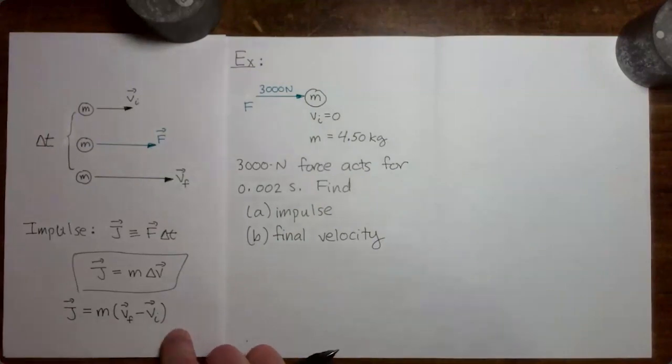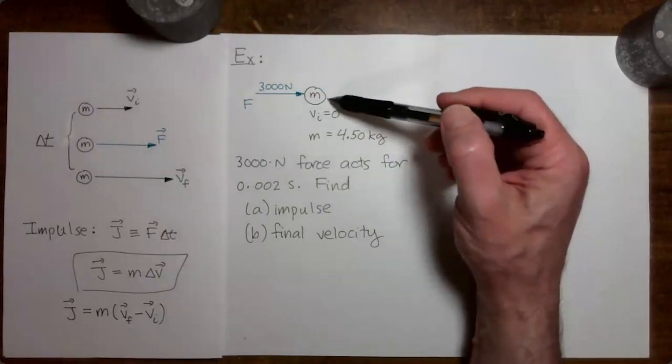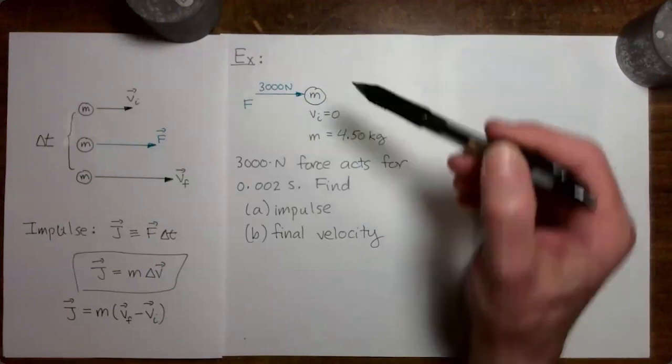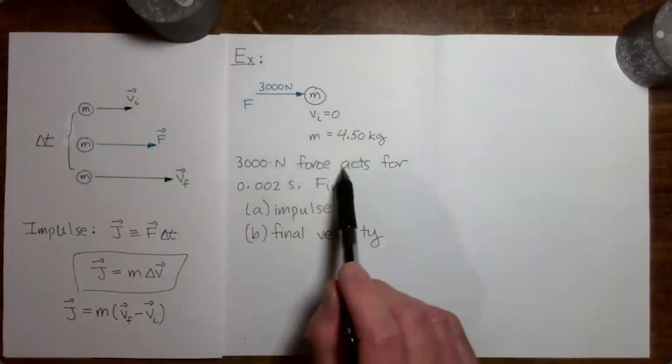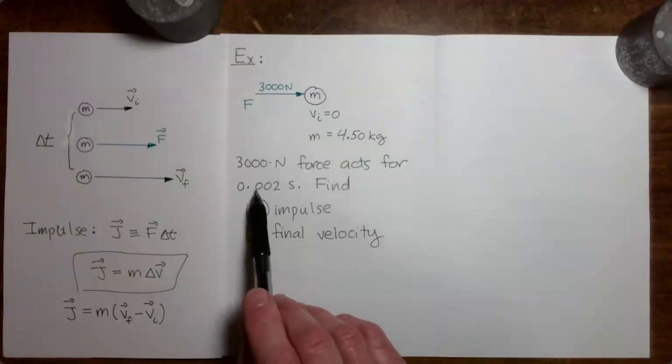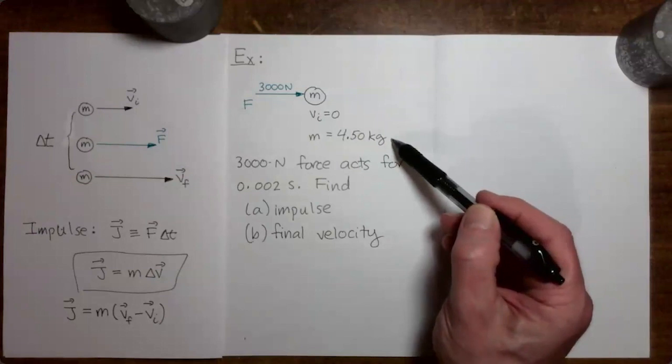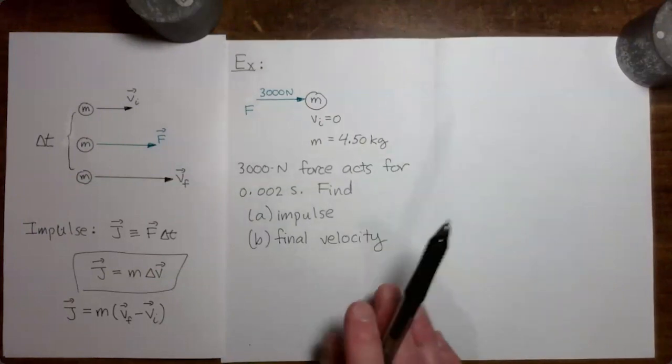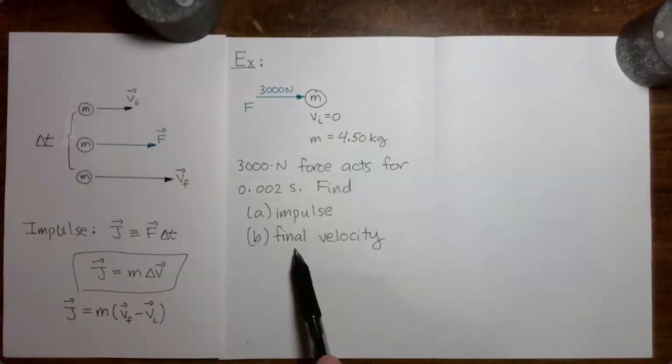Starting from this result, we're now going to do an example problem. In this example problem, I have a mass which is initially sitting here motionless. And then a 3000 Newton force acting to the right is going to come in and act on that mass for 0.002 seconds. We say that the mass is equal to 4.5 kilograms. We want to find the impulse delivered to the mass by the force and also the final velocity after the force is done acting on the mass.